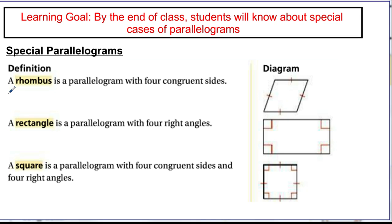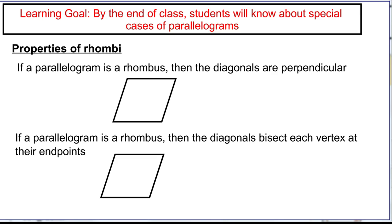We're going to focus on a rhombus. We know everything from parallelograms is true, and the definition says all sides are congruent. But is there anything else that's also true about a rhombus? Here are the two additional properties. The plural of rhombus is rhombi. If a parallelogram is a rhombus, the diagonals are perpendicular to each other.